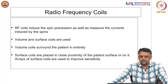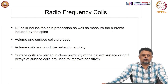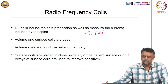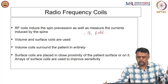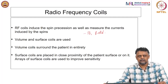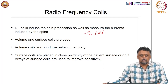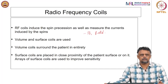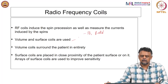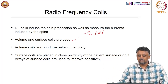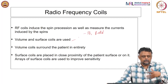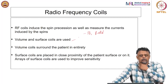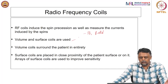The radio frequency coils produce the B1 field, which induces spin precession. These coils also measure the current induced by the spins. So the RF coils do both the excitation of the spins as well as the measurement — they act as both transmit and receive coils. There are volume coils which surround the patient and surface coils placed in close proximity to the patient. Designing these coils to get the correct RF field shape is itself a field of research.